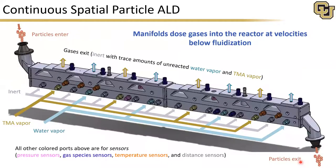The continuous spatial particle ALD reactor we have at the University of Colorado looks as follows. Our particles enter on the left-hand side and pass over a porous base plate through which the gas flows. They first encounter a purge region, followed by our first precursor region — which is TMA — another purge region, and our second precursor region. This unit, which corresponds to a single cycle of ALD, is repeated four times along the length of the reactor to complete four cycles of ALD before the particles drop out on the right-hand side.